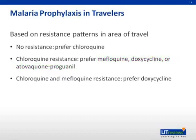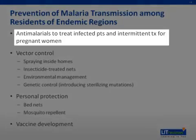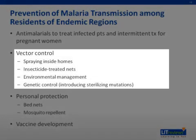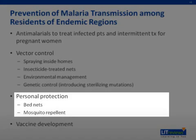There are multiple strategies used to limit the spread of malaria among residents of endemic regions. Anti-malarial drugs should be used to treat infected individuals and provided for intermittent treatment for pregnant women. Vector control includes spraying insecticides inside homes, the use of insecticide-treated nets, environmental management, and efforts to sterilize the local mosquito population by introducing sterilizing mutations. Personal protection strategies include the use of bed nets and mosquito repellent. An important long-term strategy is vaccine development, with many efforts underway to develop an effective vaccine.